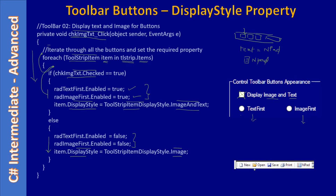Once a check mark is placed you can see that the toolbar button icon is displayed as well as its text — for example, a Save icon with text, and an N-Pad icon with text, both displayed together. When the user unchecks it, only the icon is shown again.